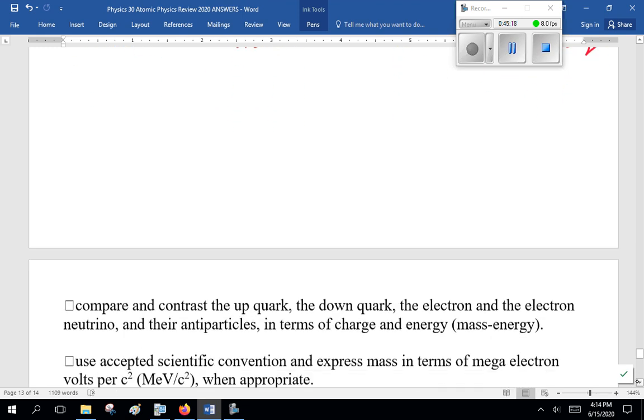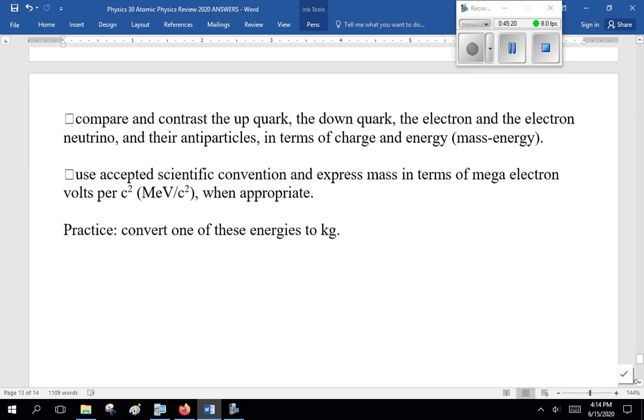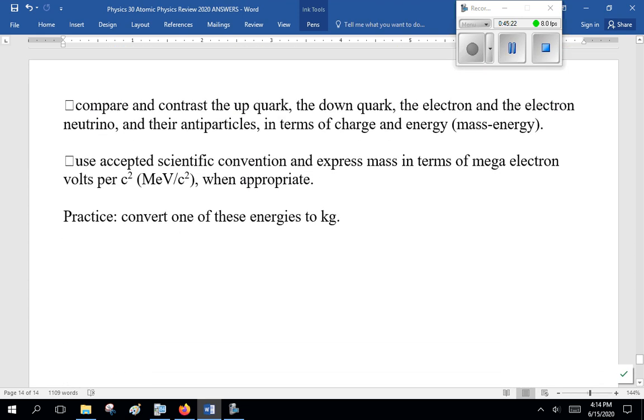And remember, quarks can change and up can become a down-down. That is a proton. That's what happens when a proton becomes a neutron and a beta-positive particle. And, of course, my neutrino, I've got to include that. Now, compare and contrast the up quark, the down quark, the electron, and the electron neutrino and their energy particles in terms of charge and energy. That's quite easy. If you go to your formula sheet, first-generation fermions, second page of your data sheet, they list all this, the charge and the mass.